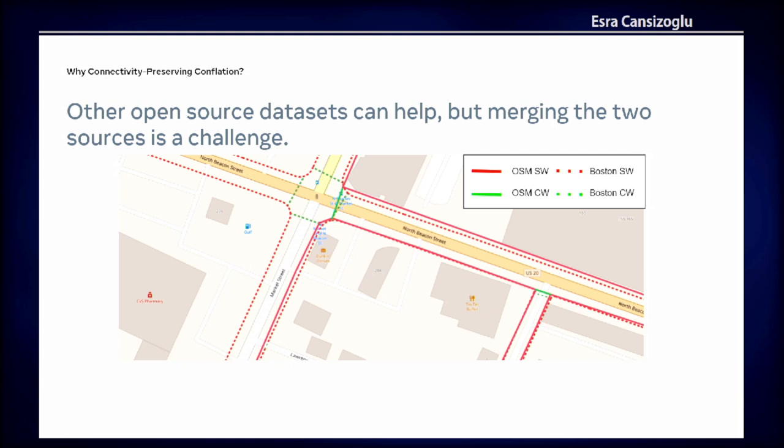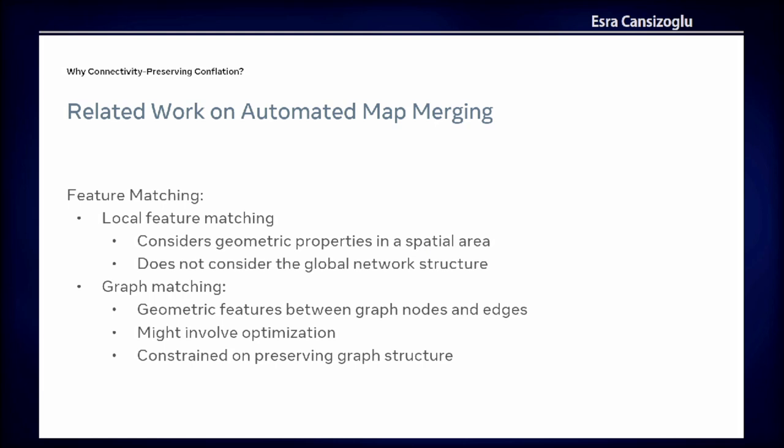These data sets can definitely help improve coverage. The question is: we have OSM data and we don't want to go away from the huge ecosystem that OSM provides by only using other open map data. So how do we merge these two different sources? How do we create a merged map at the end?